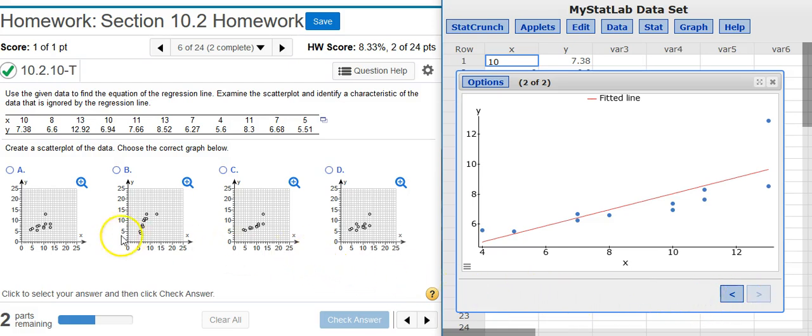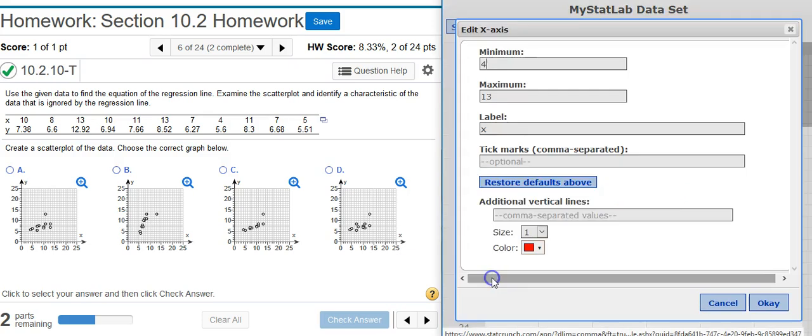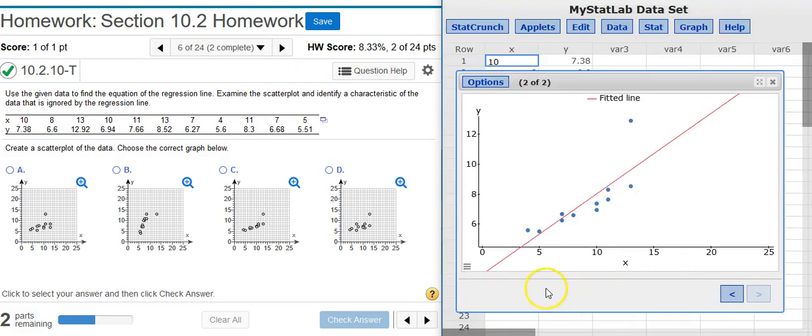Now, in order to select the right answer option from the four that I'm selected, notice how the axes on my scatterplot here in StatCrunch are different than the ones for the answer options in my problem. I can change the axes here to match, and that will make it much easier to see which answer option is the right one. So, I click on this little three-line icon in the bottom left corner, and now I can select each axis independently and change the values here for maximum and minimum so that they match what I see in the problem statement.